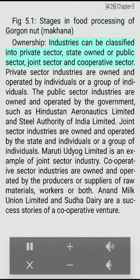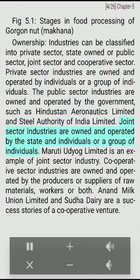Based on ownership, industries can be classified into private sector, state-owned or public sector, joint sector, and cooperative sector. Private sector industries are owned and operated by individuals or a group of individuals. Public sector industries are operated by the government, such as Hindustan Aeronautics Limited and Steel Authority of India Limited. Joint sector industries are owned and operated by the state and individuals together. Maruti Udyog Limited is an example. Cooperative sector industries are owned by producers or suppliers of raw materials, workers, or both. Anand Milk Union Limited and Sudha Dairy are success stories of cooperative ventures.